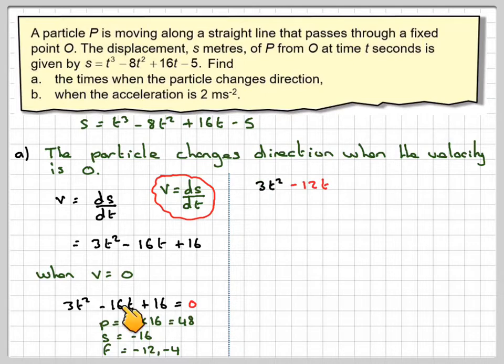So when we now write down the expression but split the middle term up into minus 12t minus 4t plus 16t is equal to 0. We now group the first two terms together. Factorize fully. So the common factor is 3t. And you're going to be left with t minus 4.